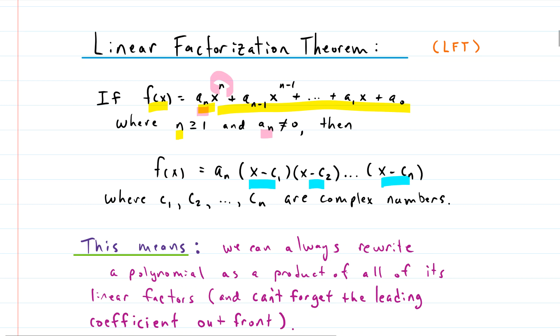So if you take all the x-intercepts and plug them in for the c's, and then you take the leading coefficient a_n and you plop it out front, there you go - that is a rewritten version of your polynomial f. So we can always rewrite the polynomial as a product of all of its linear factors